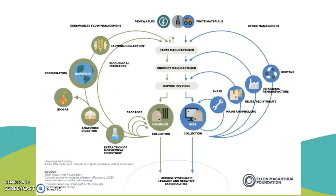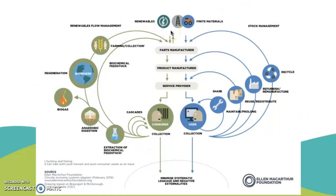Here we have the circular economy diagram from the Ellen MacArthur Foundation. This is a systems diagram showing how we can transform biological cycles and technical cycles to make them sustainable. For biological cycles, it's basically creating products so that they give back to the environment and regenerate the biosphere.